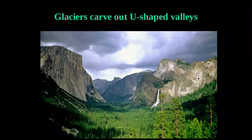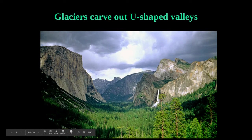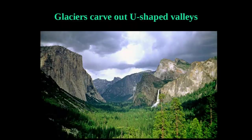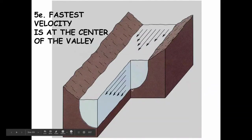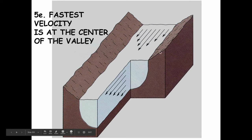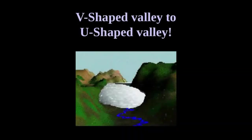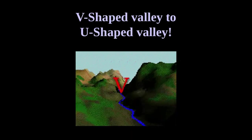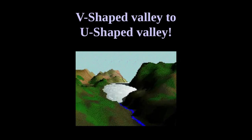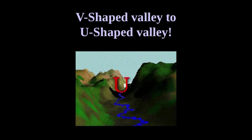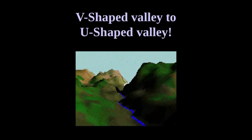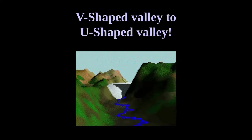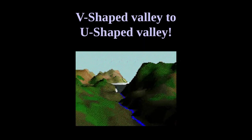A glacier moves fastest in the center of the valley, just like a river, because there's less friction — the ice particles aren't rubbing against the valley sides. An animation shows a V-shaped valley carved by a river, then a glacier comes through and widens it into a U-shape. The glacier acts like a bulldozer, transforming the V into a U.